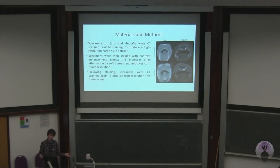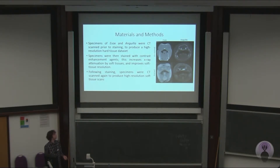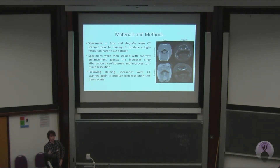So how does contrast-enhanced CT work? First, you get your specimens and CT scan them normally. That gives you a lovely high-resolution data set of all the bones, all the teeth, and all the normal hard tissues. Then you add a contrast-enhancing agent, which is normally an iodine stain. This is taken up by the soft tissue and increases their X-ray attenuation, which means that when you put your specimen back in the CT scanner, the soft tissues actually show up and you get a lovely high-res soft tissue data set.